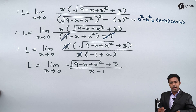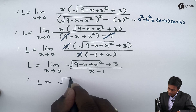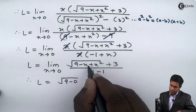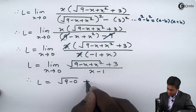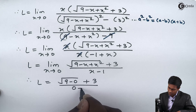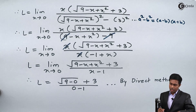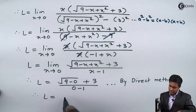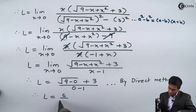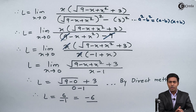Now we can apply the direct method again. Substituting x as 0: we get square root of 9 minus 0 plus 0, which is square root of 9 equals 3, so 3 plus 3 equals 6 in the numerator, and 0 minus 1 equals minus 1 in the denominator. Therefore L equals 6 upon minus 1, which gives us minus 6. The value of the given limit is minus 6. Thank you.